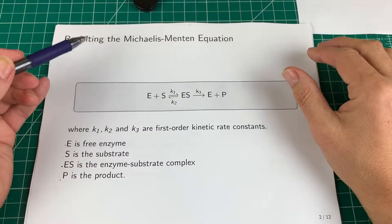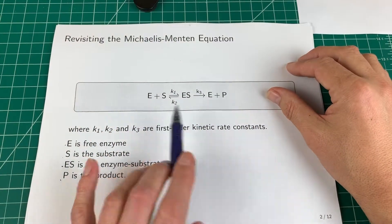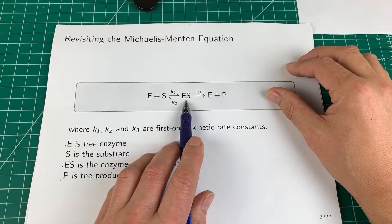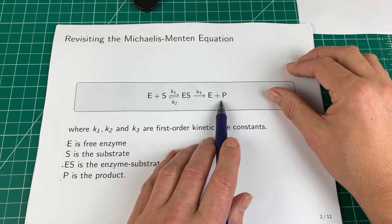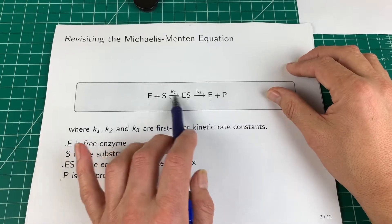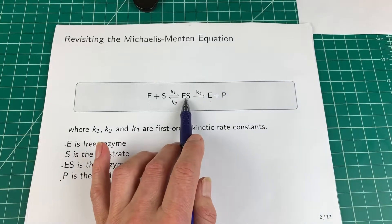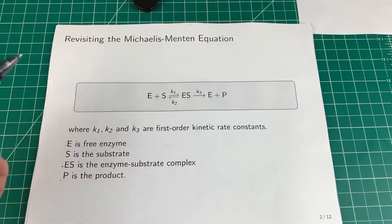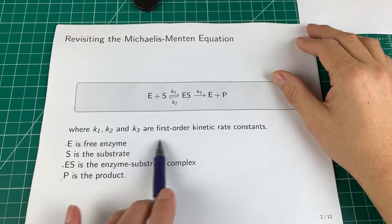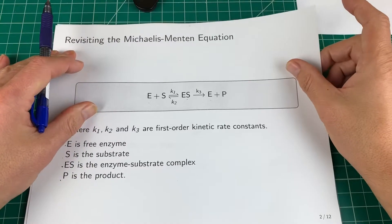So if you recall, the enzyme Michaelis equation was derived assuming this mechanism where we have free enzyme plus substrate gives enzyme-substrate complex, which then breaks down into free enzyme and substrate. In the Michaelis-Menten equation we assumed that the enzyme and substrate was in equilibrium with the enzyme-substrate complex, and in doing so we were able to derive the equation. These little k's here are just the first order kinetic rate constants which we won't use in this lecture.